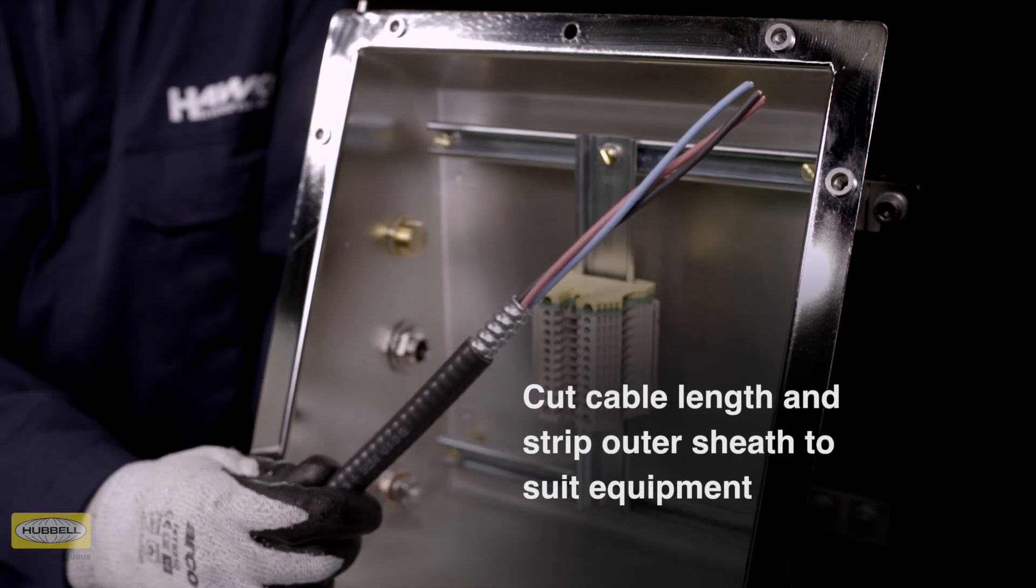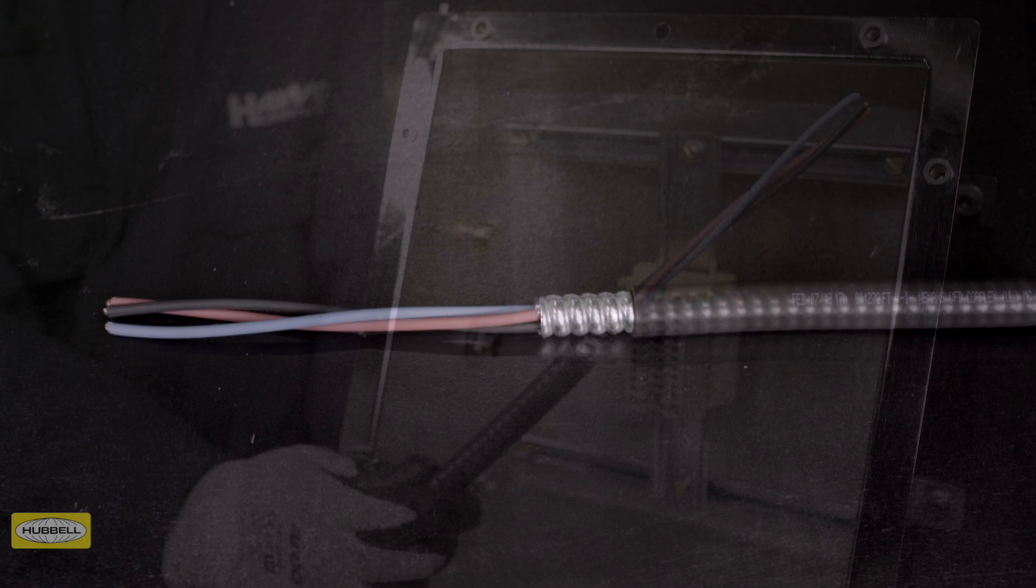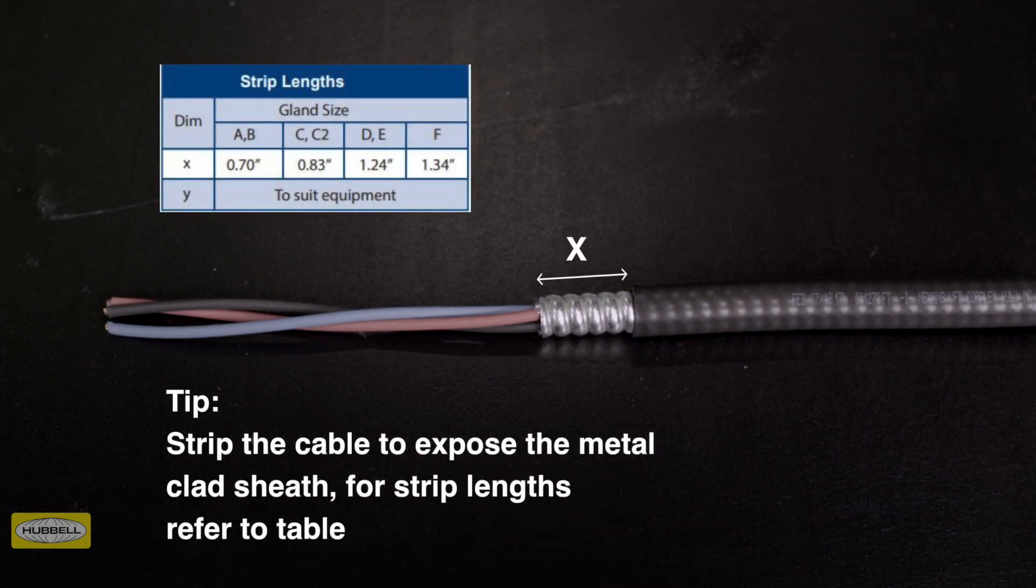Allow sufficient length of cable to suit the equipment the cable is being terminated into. Strip the cable to expose the metal clad sheath to enable the connection of the conductors to the terminal.